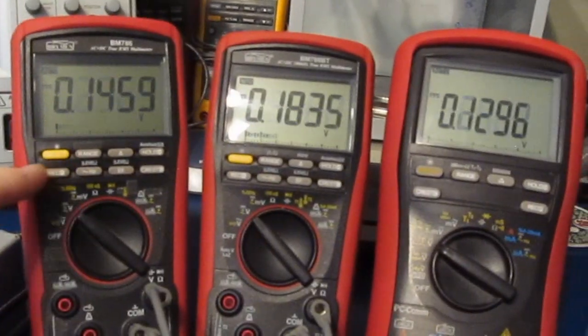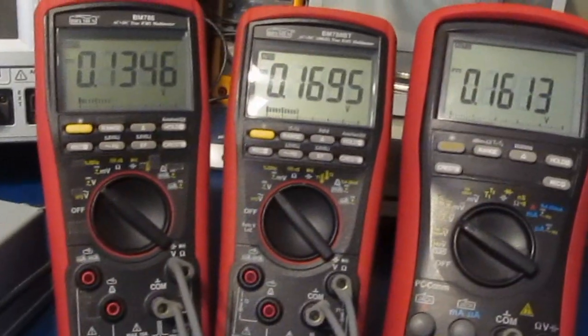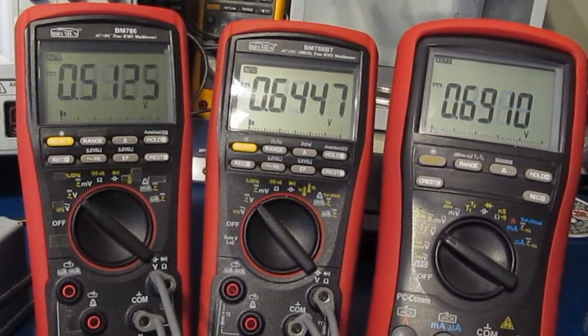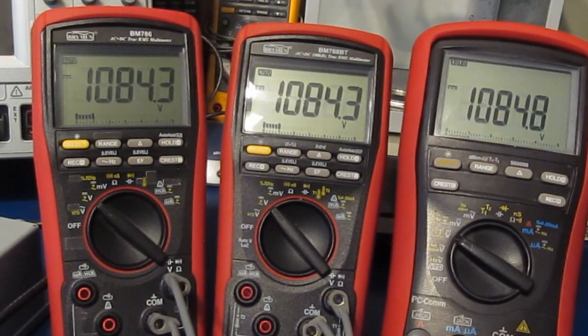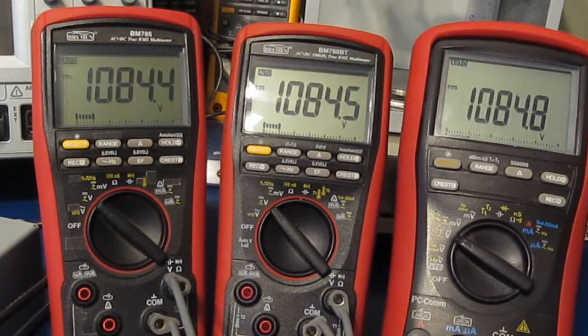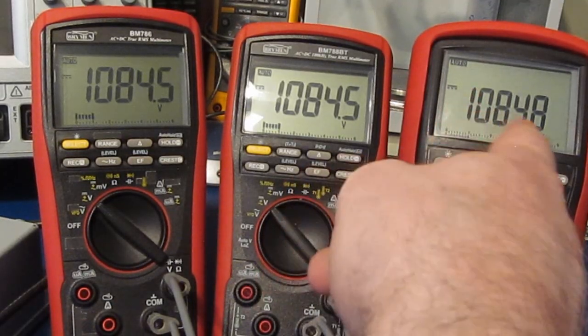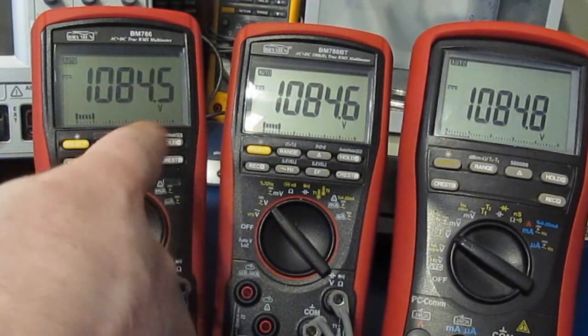So I did go back and realign the meter using the supplied kilovolts power supply and I used my HP 34401a as a reference. We'll go ahead and take them up to about a thousand volts, and you can see 1084.8, 1084.6, 1084.5.